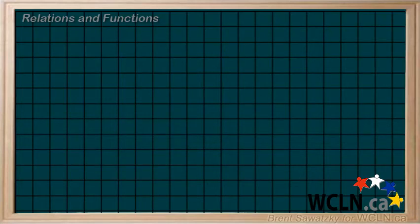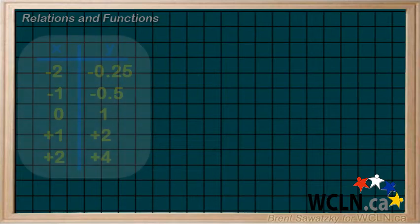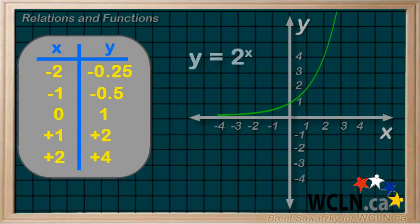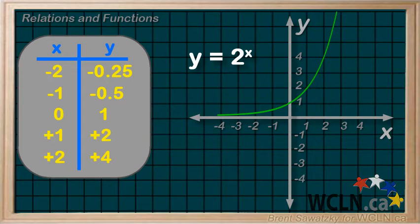Let's clarify some terminology here. We can describe a relation using a set of points, whether in a table or a list, a graph, and or an equation. Relations should be pretty familiar to you in any of these forms. So let's talk about a particular kind of relation — a function. A function is simply a relation that has only one y-value for any x-value. Let's take a look at some ways to recognize whether a relation is also a function.